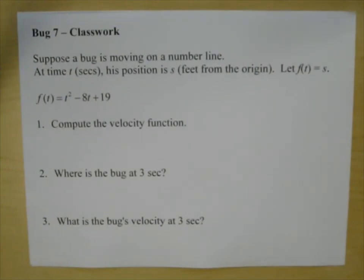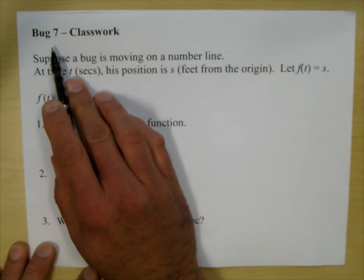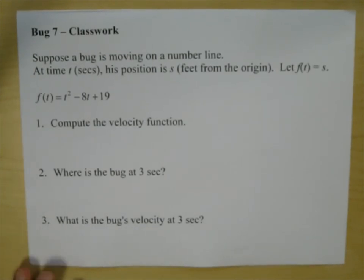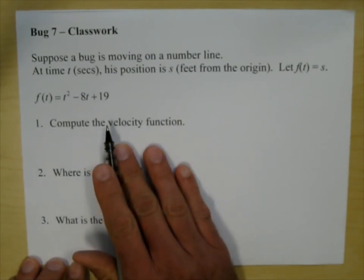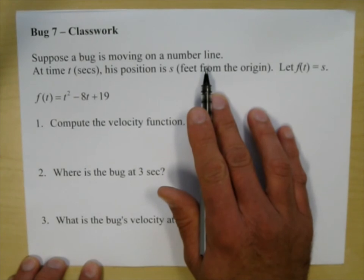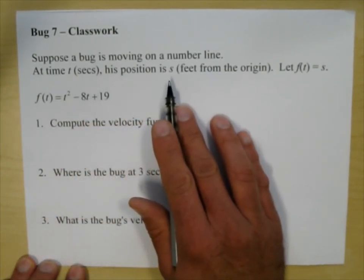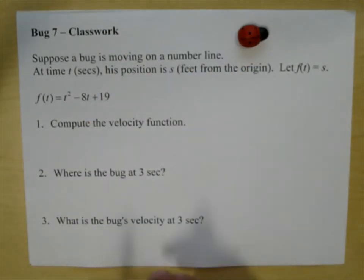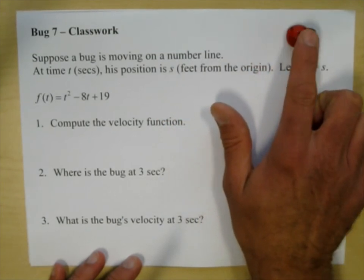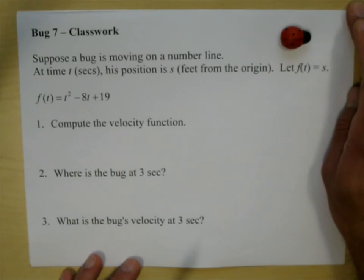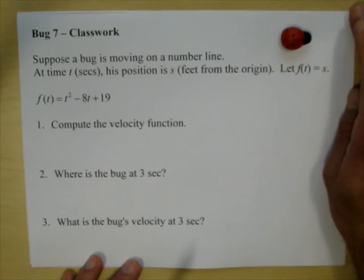Math 265A, Cuesta College. I'm Joe Vasta and this lecture is Bug 7. So what we're going to do is go back and investigate the bugs, but now we know shortcuts for finding the velocity function. Suppose a bug is moving on a number line — at time t seconds his position is s feet from the origin, with f of t equal s.